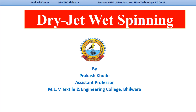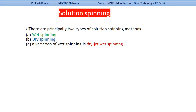Hello friends, today we will discuss the dry jet wet spinning systems. In the last lecture we discussed wet spinning and dry spinning systems and how they differ. Solution spinning systems have two basic types: wet spinning and dry spinning. Today we focus on how these differ from dry jet wet spinning.